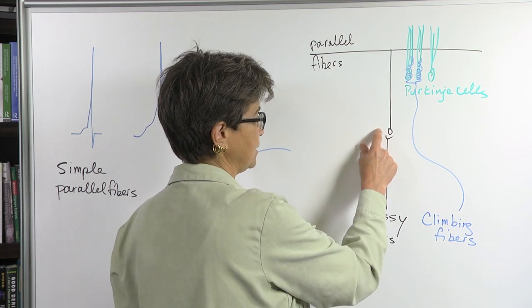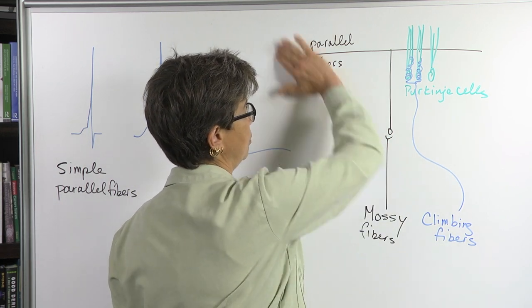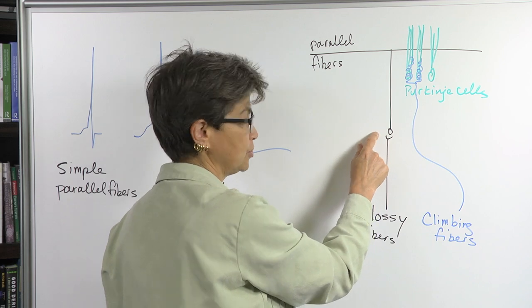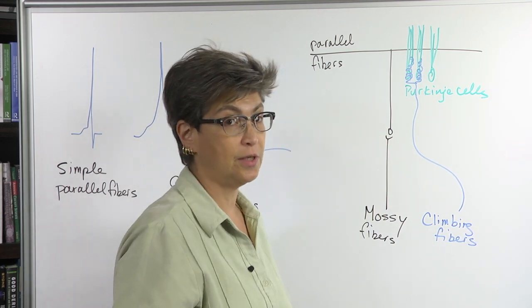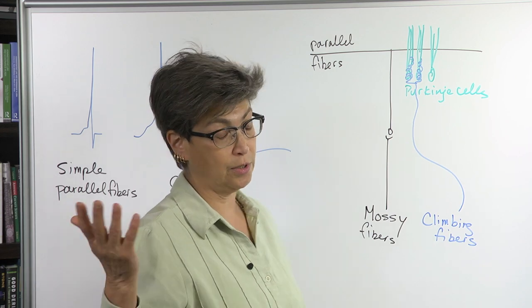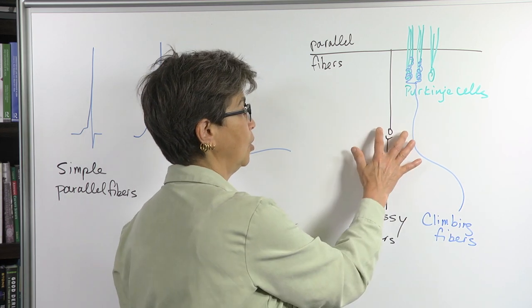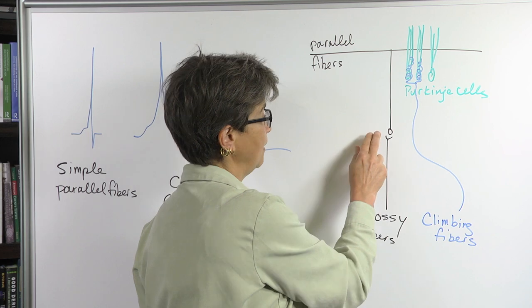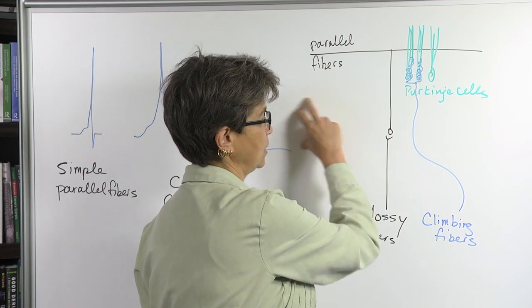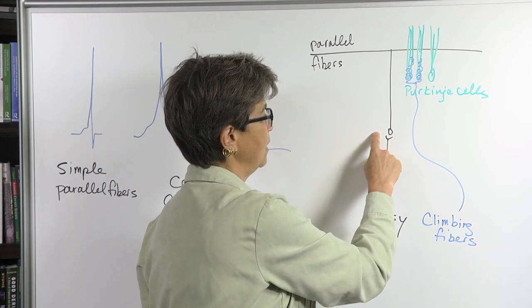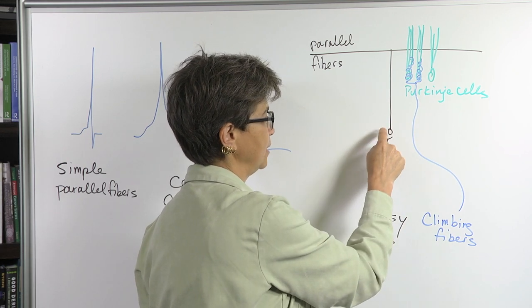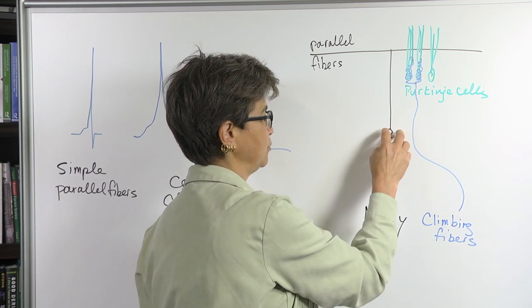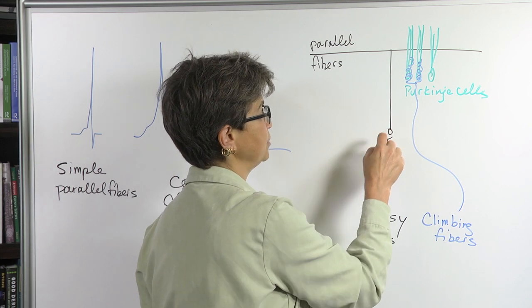So the mossy fibers project into the cerebellar cortex, this is all cerebellar cortex, onto cells called granule cells. These are the half of all the neurons in the human brain, or in the mammalian brain, are granule cells. So there are lots and lots and lots and lots of these. They're very small. They're very densely packed. Mossy fibers come in. They talk to them. And a lot of mossy fibers will converge on one granule cell.